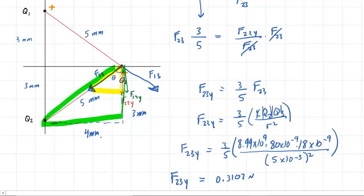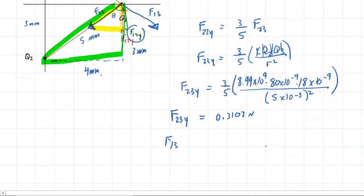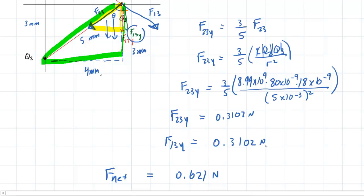The Y component for F1,3 is the same value. So F1,3,y is also approximately 0.3107 newtons. To get the net force, we add them together: 0.3107 + 0.3107 ≈ 0.621 newtons. But we must be careful about direction — both Y components point downward, so we need a negative sign. In unit vector notation, the answer to part B is −0.621 newtons j-hat, where j-hat symbolizes the Y direction.